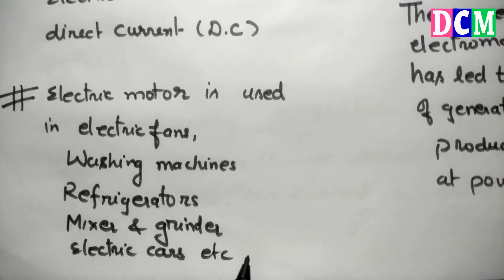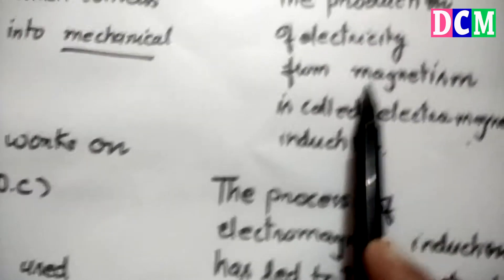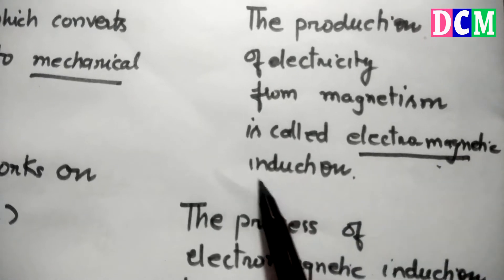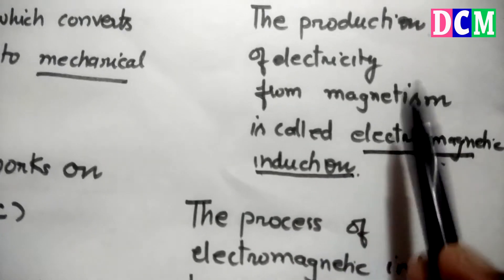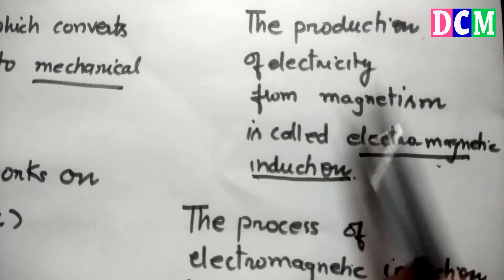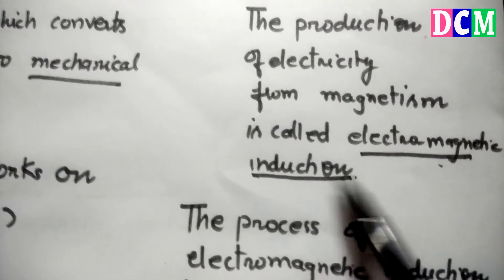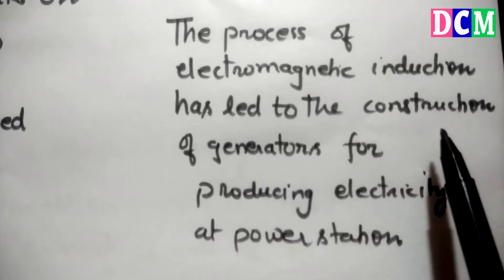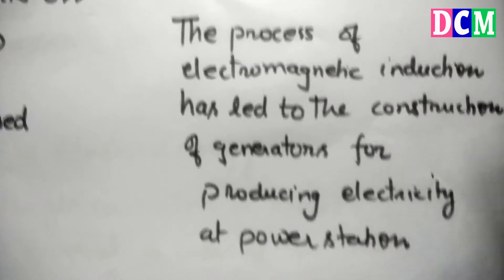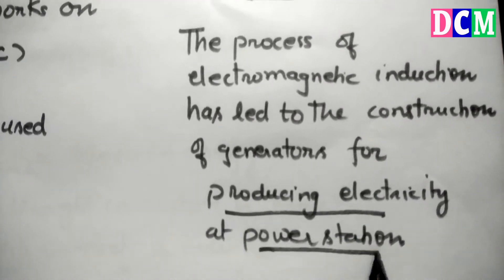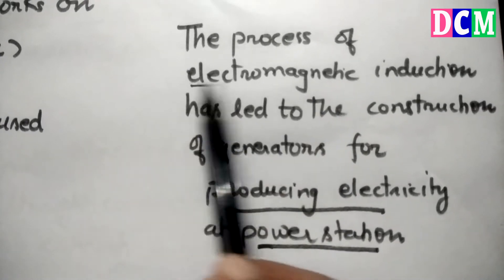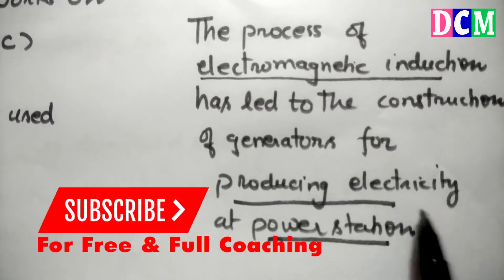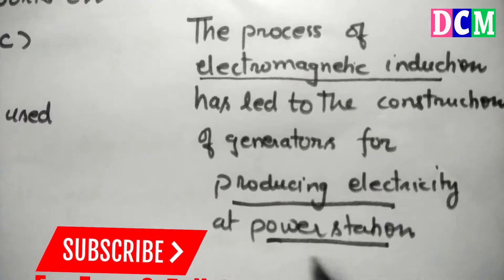The production of electricity from magnetism is called electromagnetic induction. The process of electromagnetic induction has led to the construction of generators for producing electricity at power stations. This is the base for generators for producing electricity at power stations.